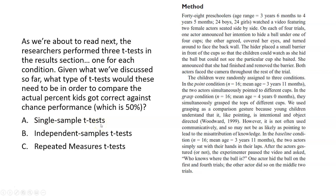As we're about to read, the researchers performed three t-tests in the results section — one for each condition. Given that we're comparing the actual percent that kids got correct against chance performance of 50%, what type of t-tests would these need to be? The answer is a single sample t-test — because we just have a single sample of young preschoolers performing in a task, and we're comparing their mean performance in each condition against the chance performance of 50%, which is a hypothesized logical value.